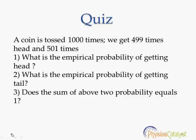What is the empirical probability of getting head? The second one: what is the empirical probability of getting tail? Third one: does the sum of our 2 probabilities equal to 1?